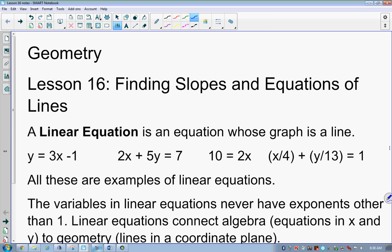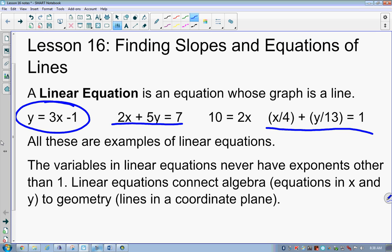So today we're talking about finding slopes and equations of lines, and what we have here is a list of four different types of linear equations. There are just four different forms. Obviously, the one that we're most familiar with is this one here on the left. What do we call that form? Slope-intercept form. This is what is called standard form. This is the general form. But these are examples of linear equations. The variables in linear equations never have exponents other than one. If it has an exponent, you're dealing with maybe a quadratic equation or something else. Linear equations connect algebra, equations in X and Y, to geometry, which is our lines in a coordinate plane.